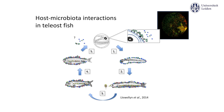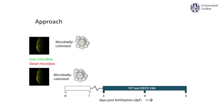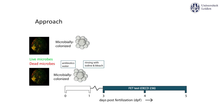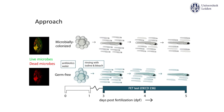These chorion microbes colonize the larvae when it hatches, first on the skin and when it starts feeding in the intestines. We use this in our experimental setup as it allows us to eliminate all microbes in one of our experimental treatments by briefly rinsing the eggs with bleach, killing the chorion microbes. We can then compare their nanoparticle sensitivity to that of their microbially colonized siblings.